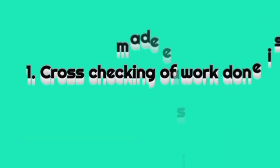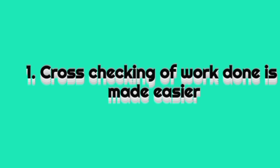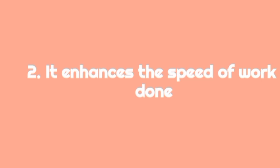Number one: cross-checking of work done is made easier. With office equipment, it is so easy for clerical staff to check their work. Secondly, it enhances the speed of work done. With office equipment, work done is easy, fast, and the speed is interesting.